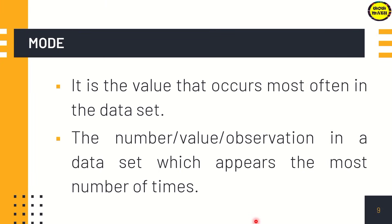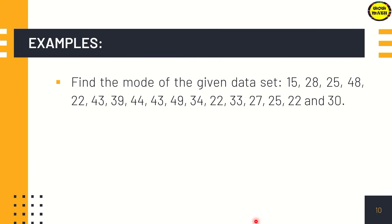The last measure of central tendency is the mode. It is the value that occurs most often in the data set, the number or value observation in a data set which appears the most number of times. For example, find the mode of the given data set: 15, 28, 25, 48, 22, 43, 39, 44, 43, 49, 34, 22, 33, 27, 25, 22, and 30.